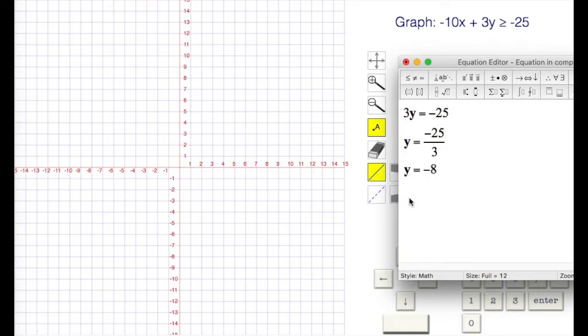So y is equal to negative 8.3 repeating, like that. We get this nice point. The x is zero, and the y is negative 8.3 repeating, like that.